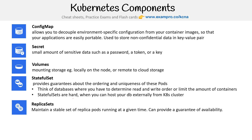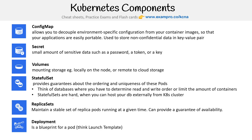You have replica sets, which maintain a stable set of replica pods running at a given time and can provide a guarantee of availability. This is just saying: take a pod and run copies of it so we have redundancy. We generally do not launch replica sets directly — we do them through a deployment. A deployment deploys a replica set, and the replica set deploys pods. So a deployment is essentially a blueprint of a pod — think of it like an EC2 launch template that templates up what should be launched.